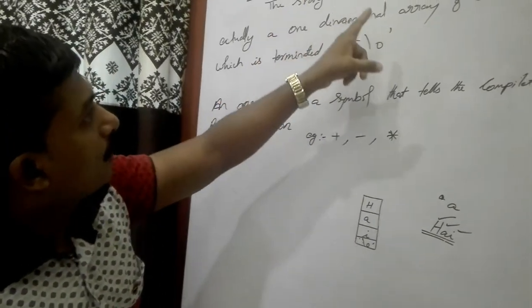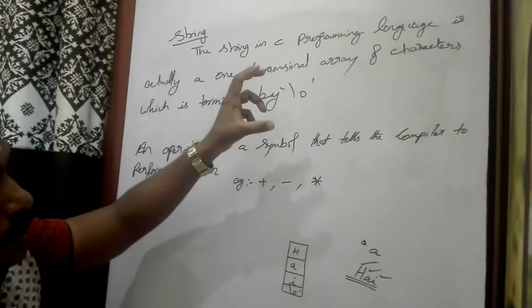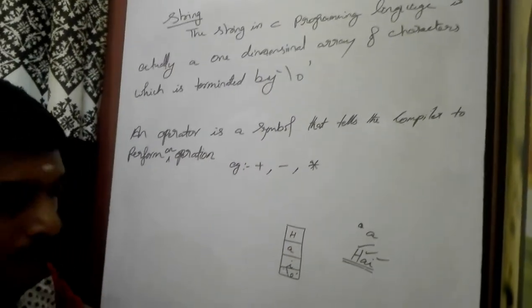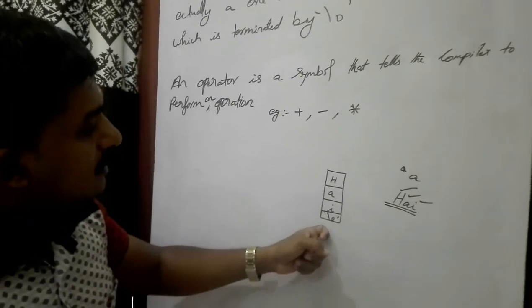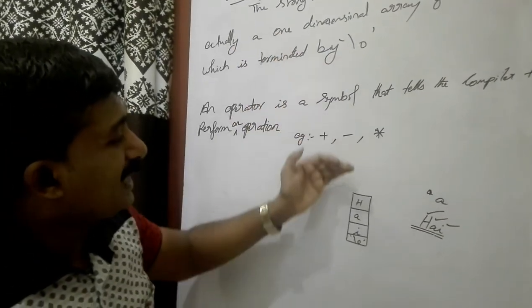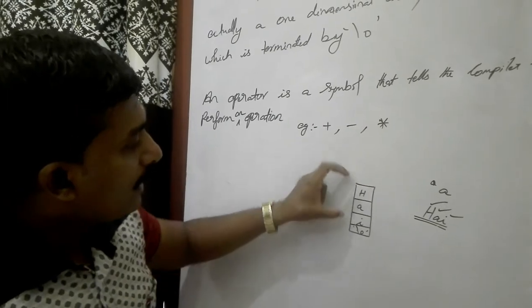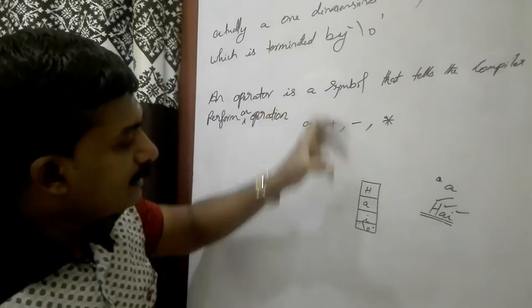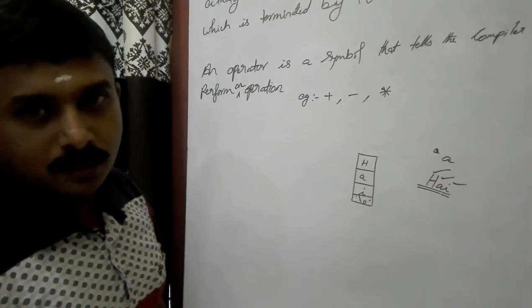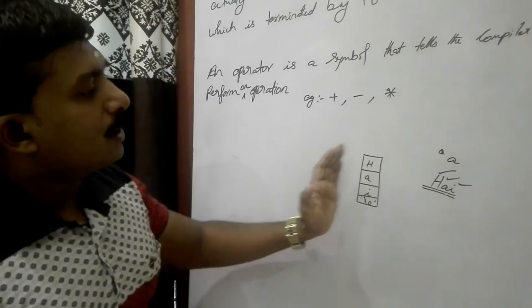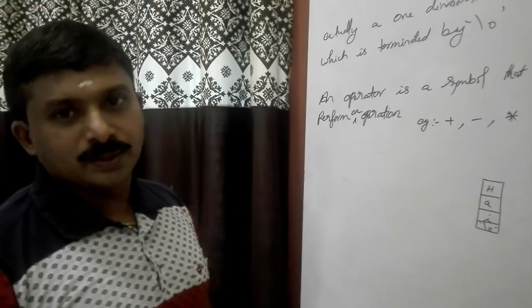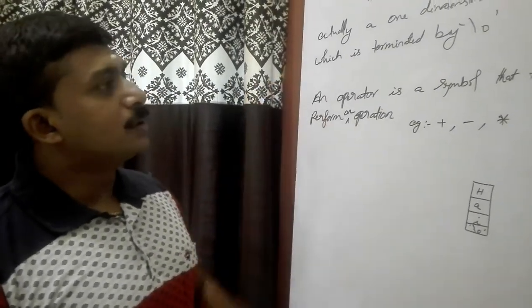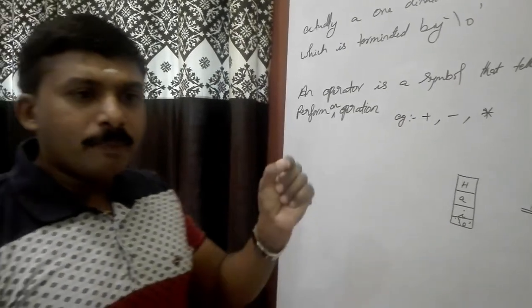The string in C programming language is actually a one-dimensional array. A one-dimensional array represents a group of characters, which forms a string.